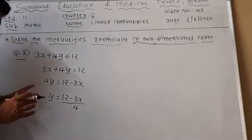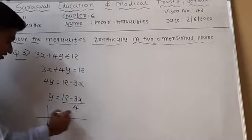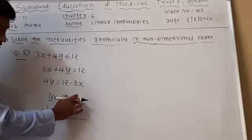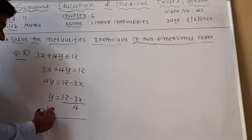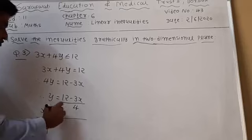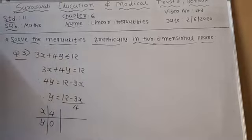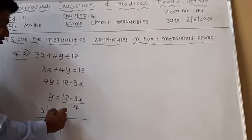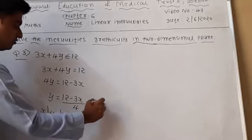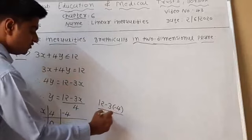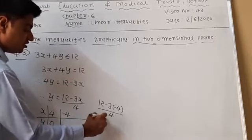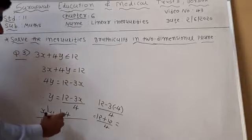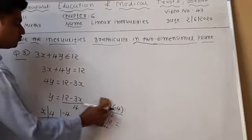Now find two ordered pairs — two values of x and y. For x equal to 4: y equals (12 minus 12) upon 4, which is 0. So one pair is (4, 0). For x equal to minus 4: y equals (12 minus 3 times minus 4) upon 4, that is (12 plus 12) upon 4, equals 24 upon 4, which is 6. So another pair is (minus 4, 6).